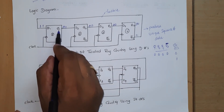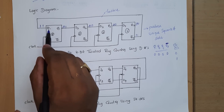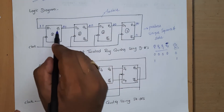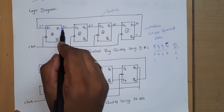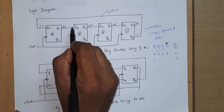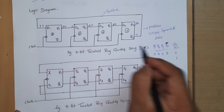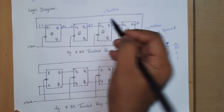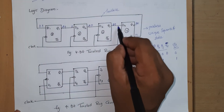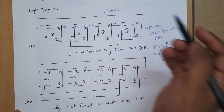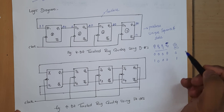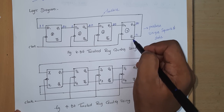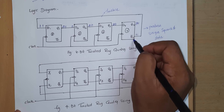After applying the first clock pulse, the input D1 is 1, so the output Q1 becomes 1. Initially Q2 was 0, so this 0 propagates to D2 and Q2 remains 0. This 0 then reaches D3 so Q3 is also 0, and this 0 goes to D4 so Q4 is also 0. The state after the first clock pulse is Q1=1, Q2=0, Q3=0, Q4=0.